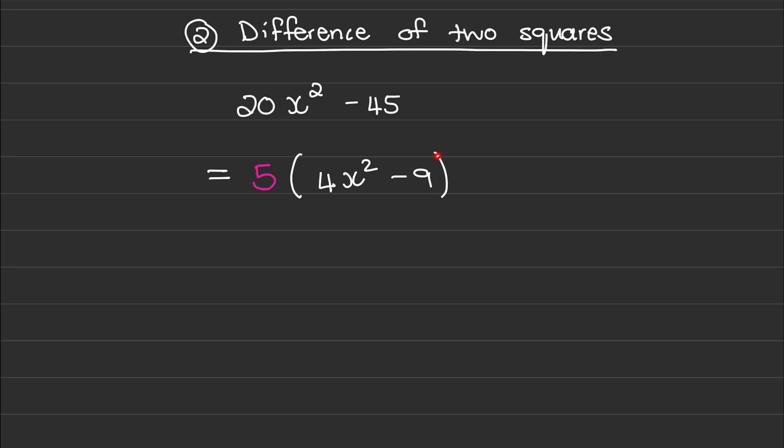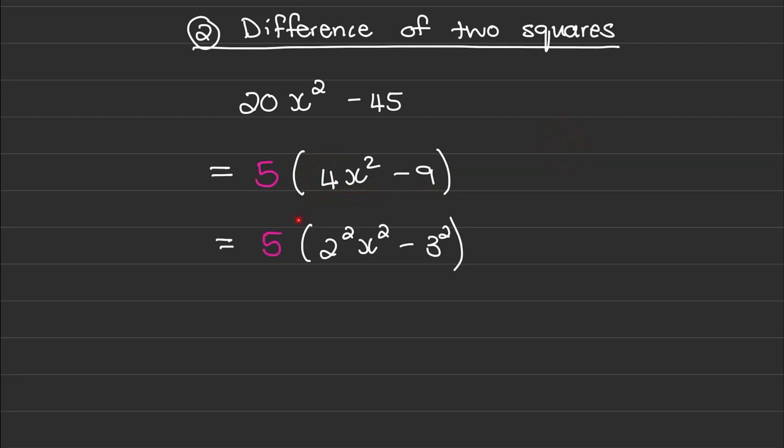Now the expression in the brackets is a difference of two squares, because 4x² and 9 both represent square numbers. If I rewrite those two terms, I can see a difference between two square terms.